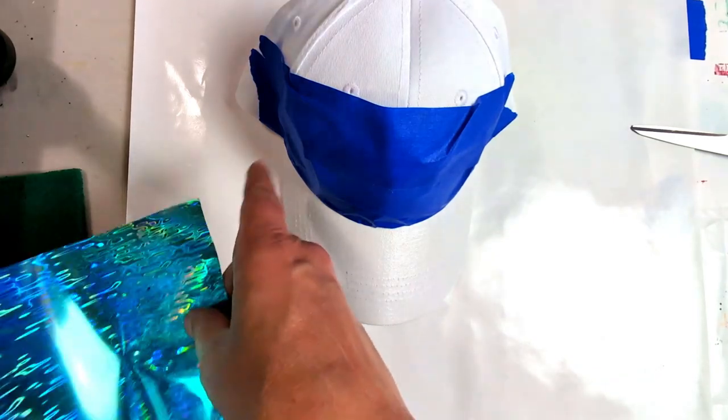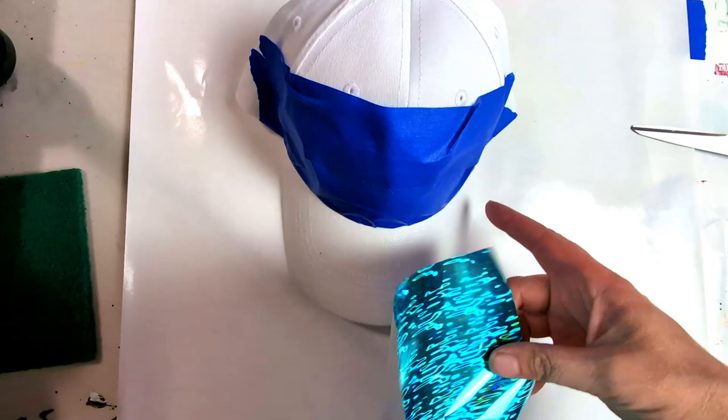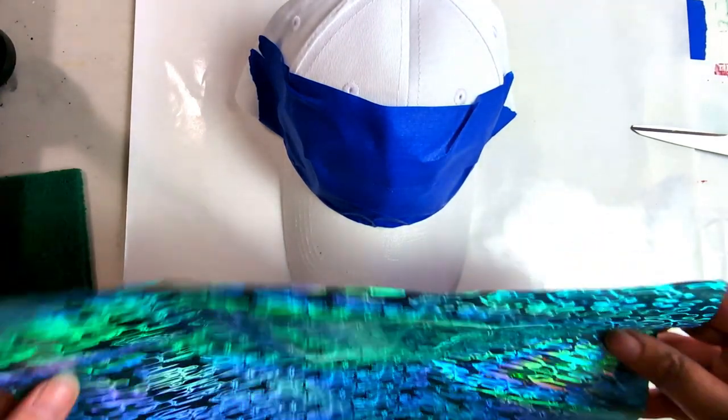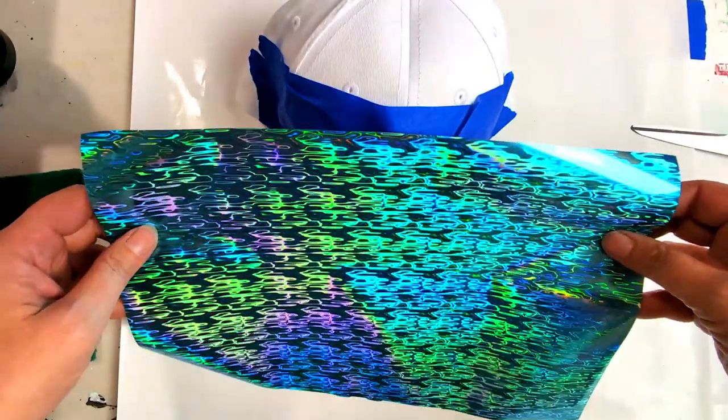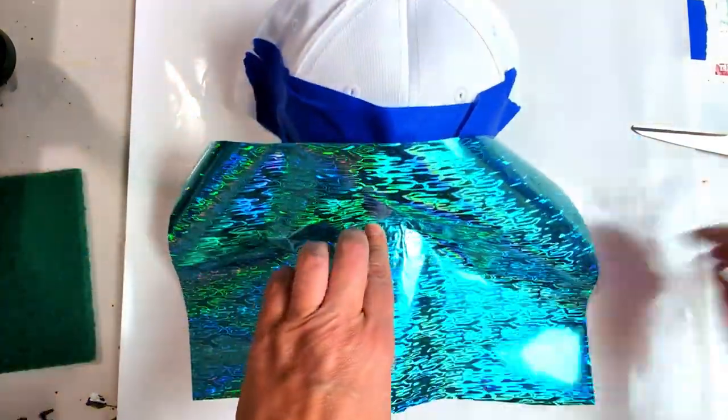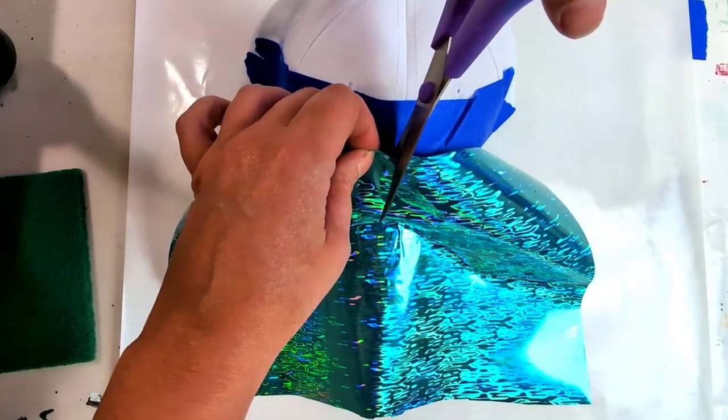When you place this on here, you want to place it up high enough to get to the corners of the hat. I am going to take some scissors, and I am going to cut down the middle here to help spread it out to the sides.